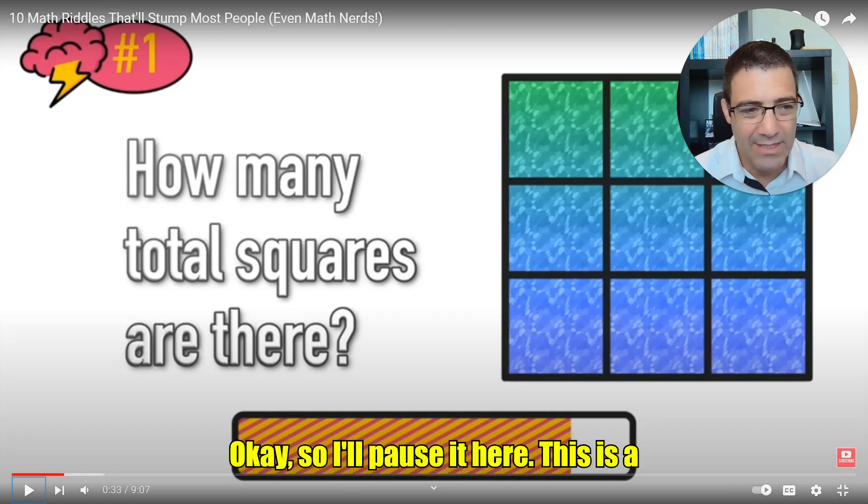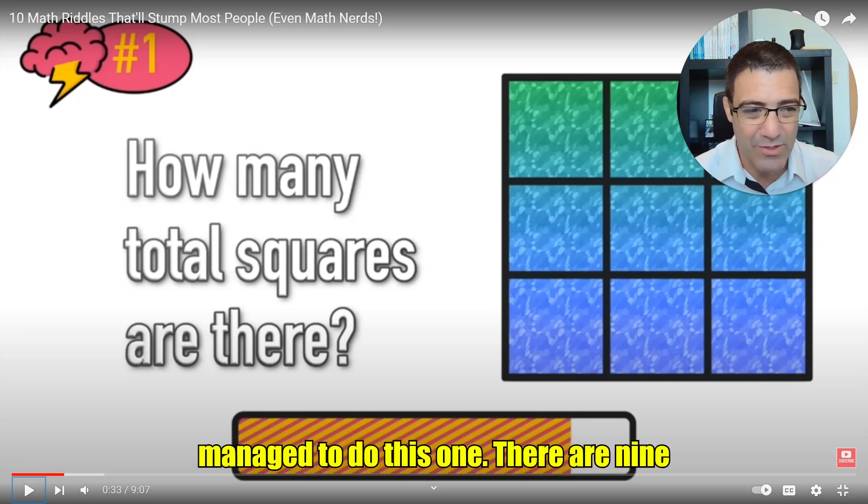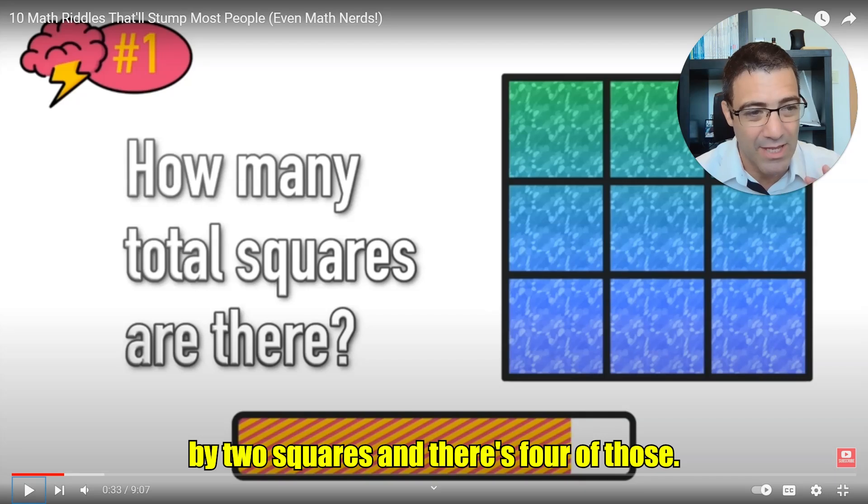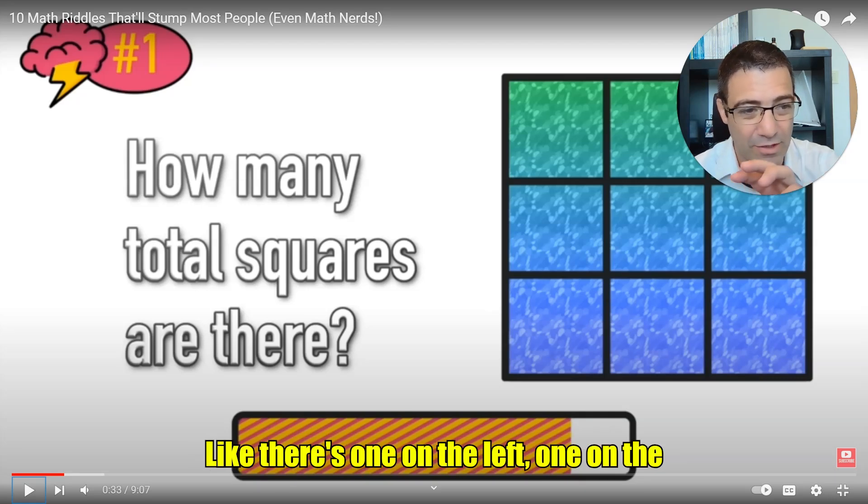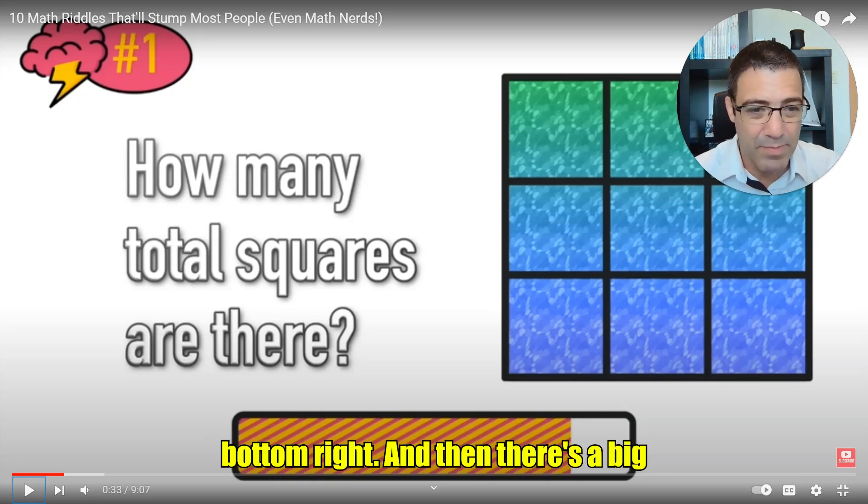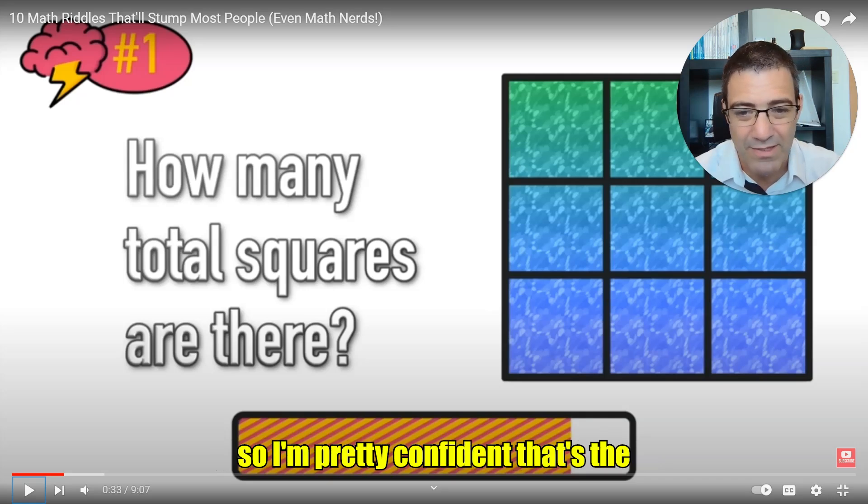Okay, so I'll pause it here. This is a pretty classic question. I hope you managed to do this one. There are nine small squares, and then you have some 2x2 squares, and there's four of those. Like, there's one on the left, one on the right, one on the bottom left, one on the bottom right, and then there's a big 3x3 square. So it's 9 plus 4 plus 3, and then 9 plus 4 plus 3 is 14, so I'm pretty confident that's the answer.